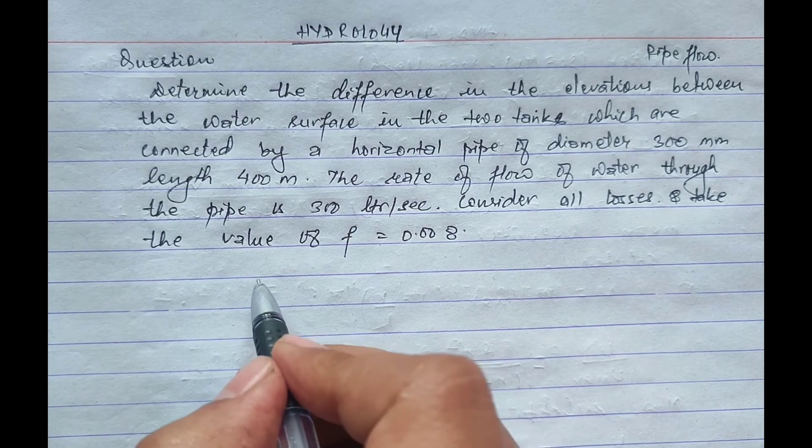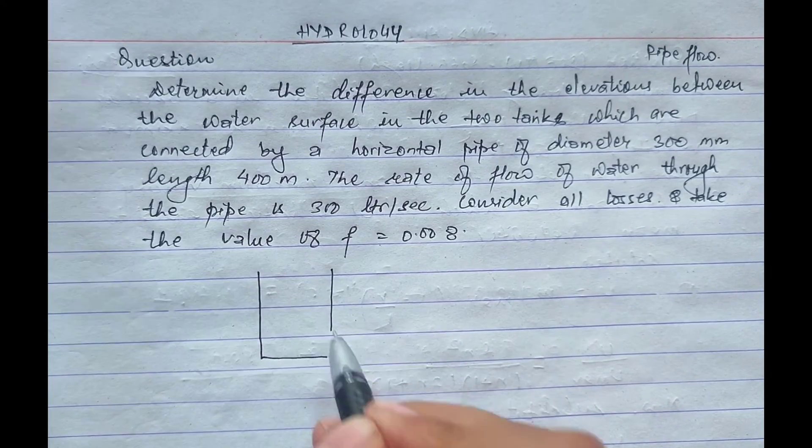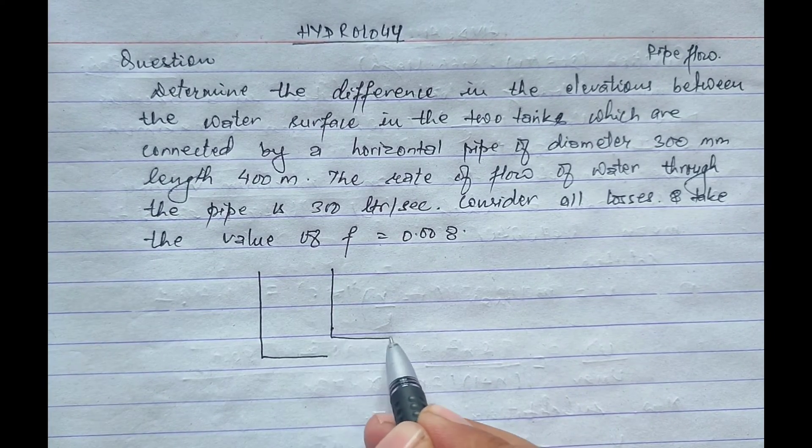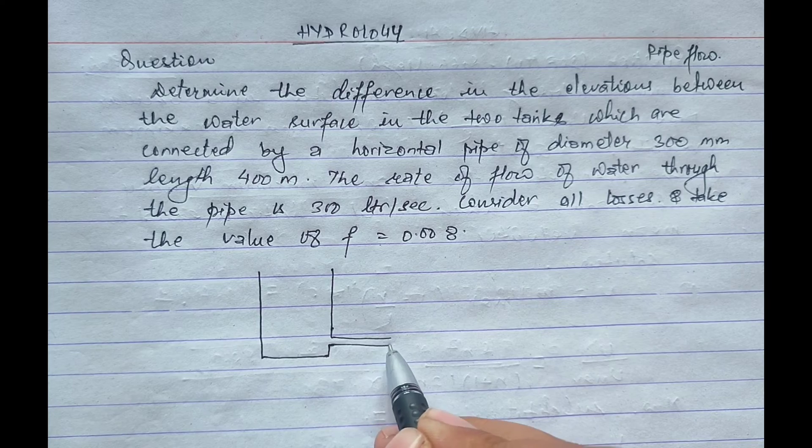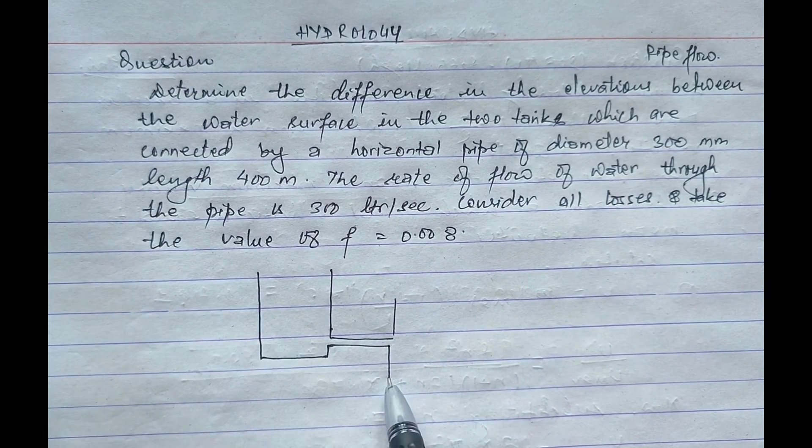This is the first tank from where a pipe is connected of 0.3 meter diameter, and this is the second tank.